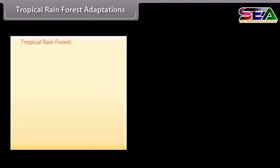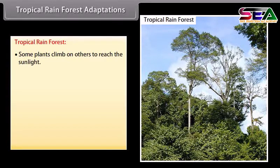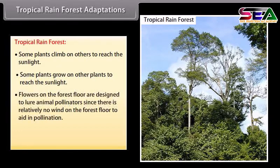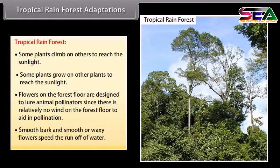In tropical rainforests, some plants climb on others to reach sunlight, and some grow on other plants to reach sunlight. Flowers on the forest floor are designed to lure animal pollinators, since there is relatively little wind on the forest floor to aid in pollination. Smooth bark and smooth or waxy flowers speed the runoff of water.